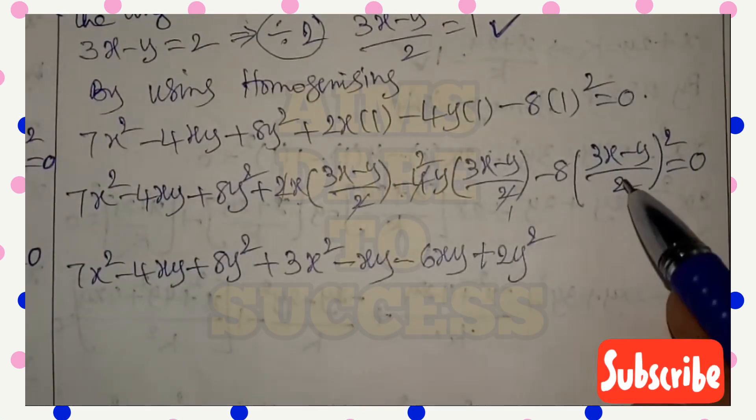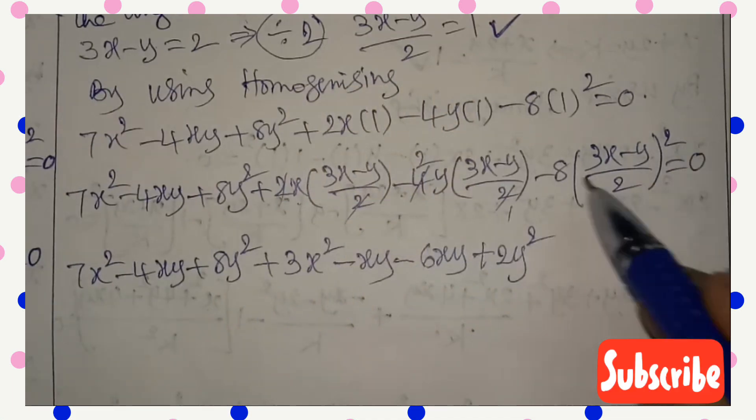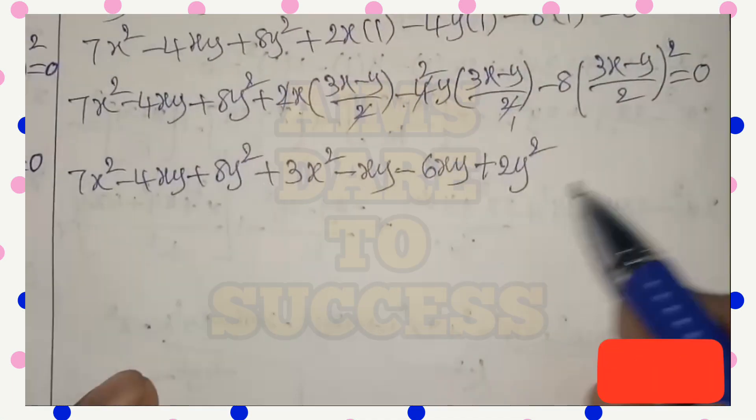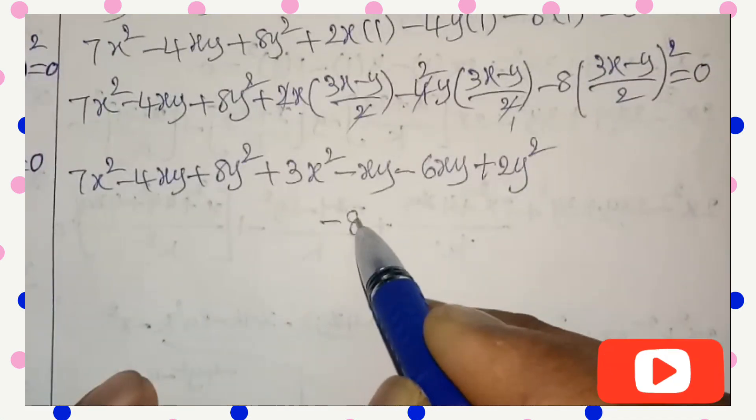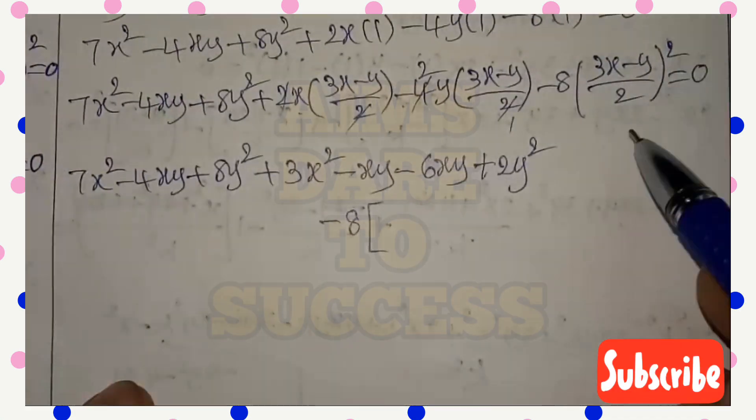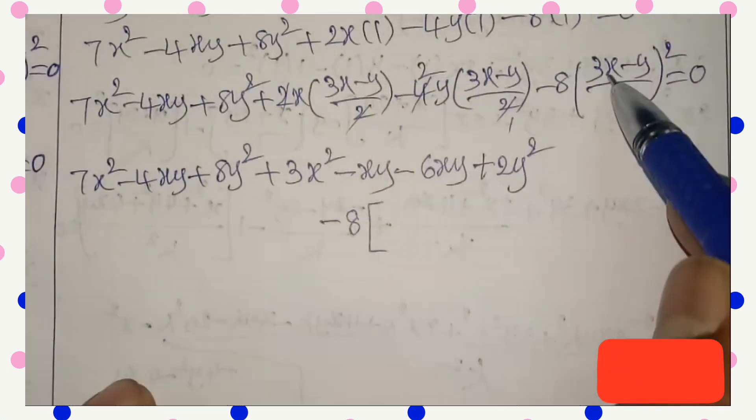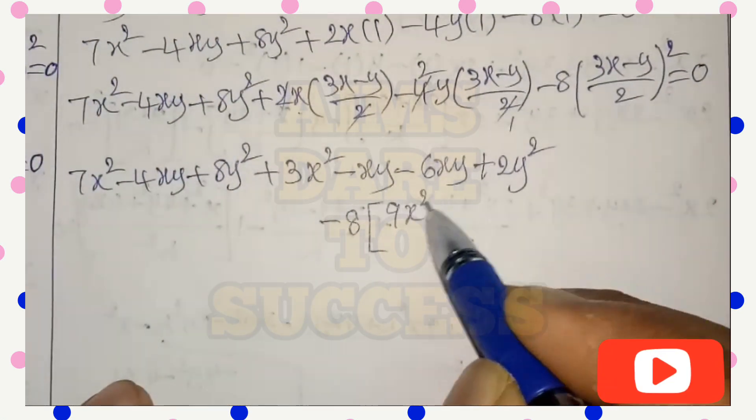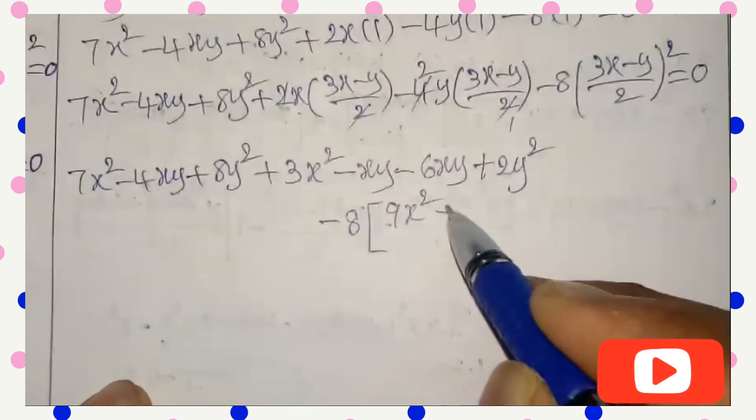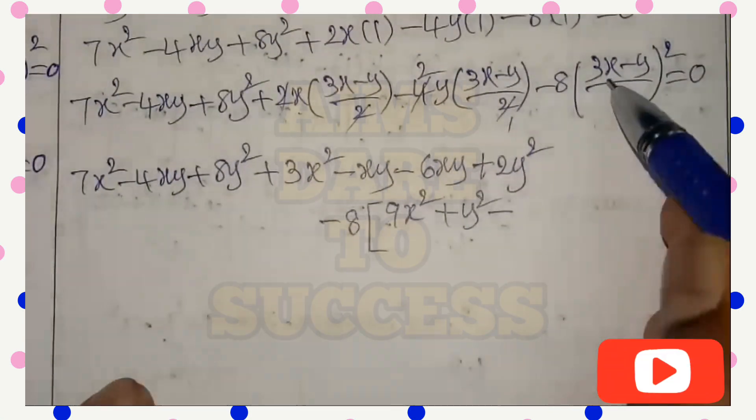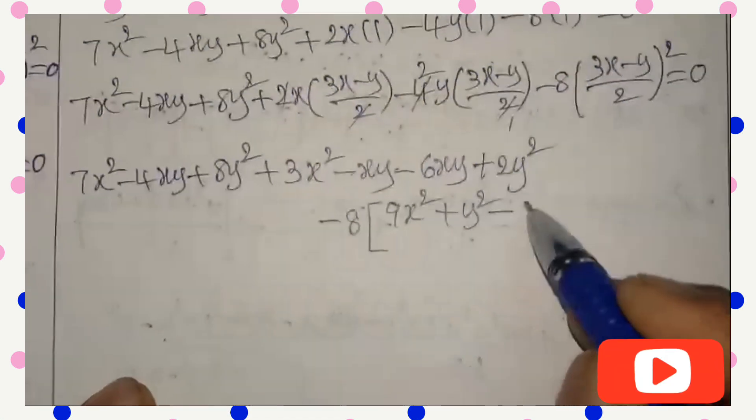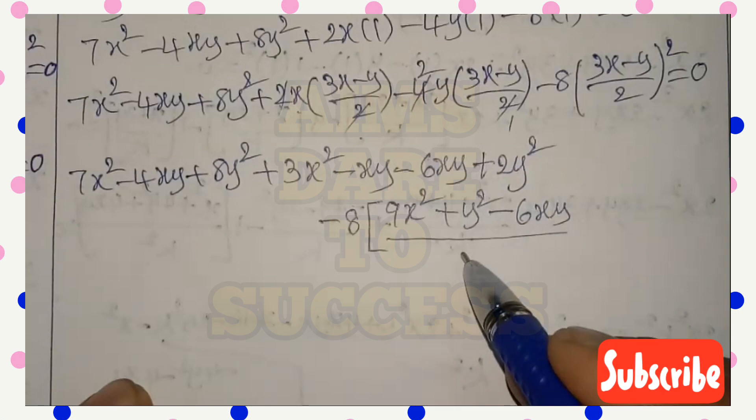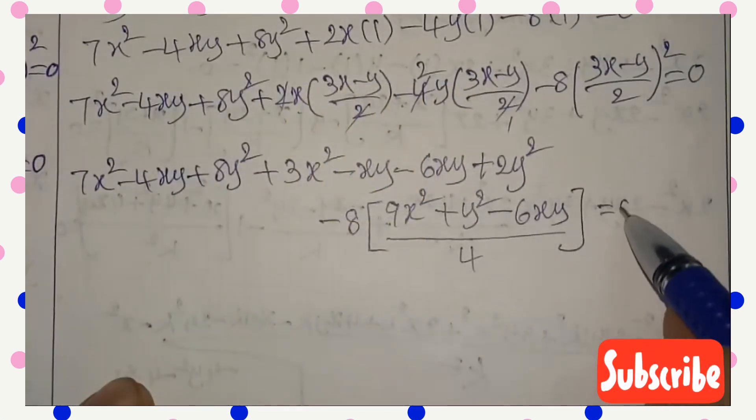Next, power first, coefficient first means power first. So without applying power, don't do cancellation. So -8 as it is. After that, (3x - y)² whole square. Power you can apply numerator and denominator separately. (3x - y)² = 9x² + y² - 6xy by 4 = 0.